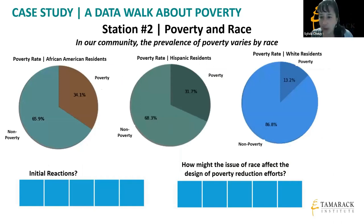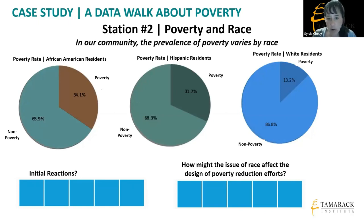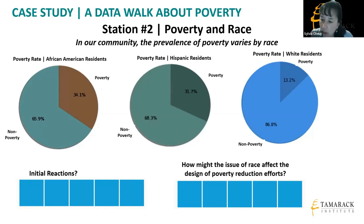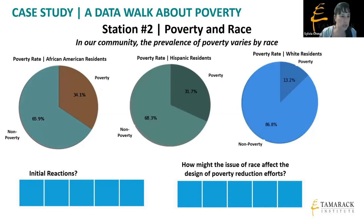The next station breaks down who's poor in the community by race — African Americans, Hispanics, and whites — showing the percentage of each group in poverty versus not in poverty. The provoking question for this station: 'How might the issue of race affect how we would design a poverty reduction effort — what do we need to think about, what do we need to know?'